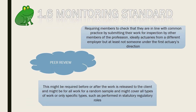1.6 Monitoring Standard: Peer Review. This requires members to check that they are in line with common practice by submitting their work for inspection by other members of the profession — ideally actuaries from a different employer, but at least not someone under the first actuary's direction. This might be required before or after the work is released to the client, and might apply to all work or a random sample, covering all types or only specific types such as those performed in statutory regulatory roles.